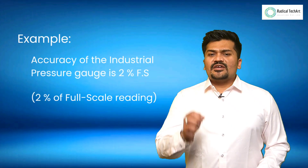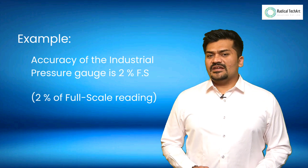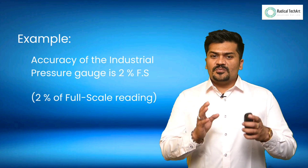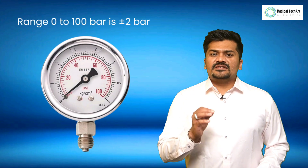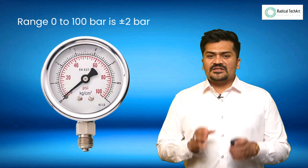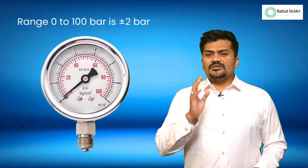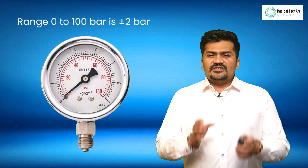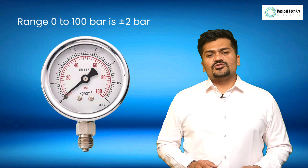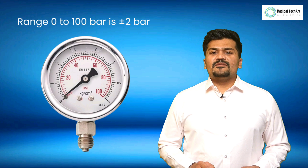Let's take one example: the accuracy of an industrial pressure gauge is 2% of full span. Consider a pressure gauge with a range of 0 to 100 bar — the accuracy is plus or minus 2 bar, meaning any measured reading can vary within plus or minus 2 bar.